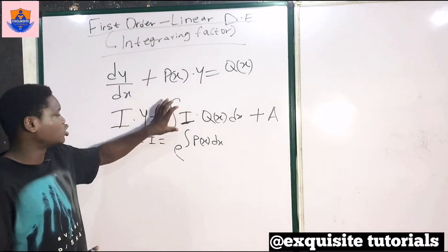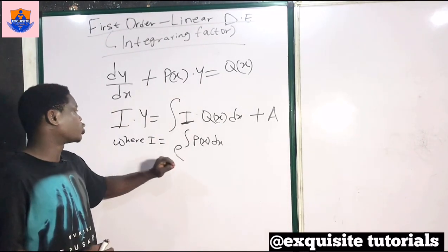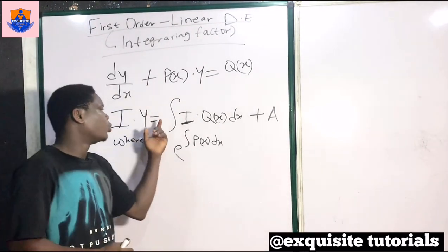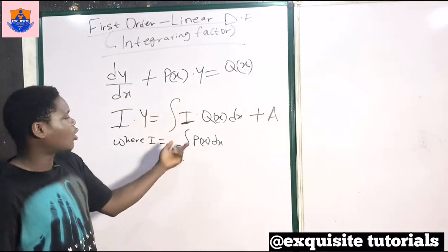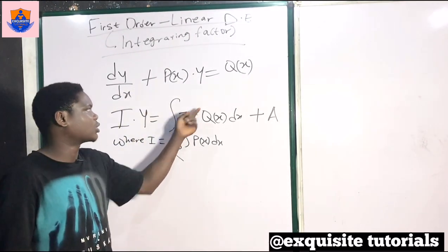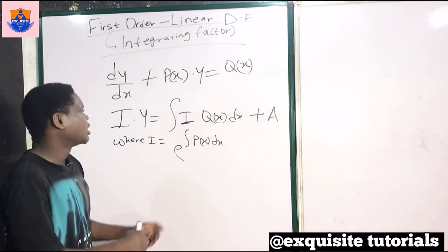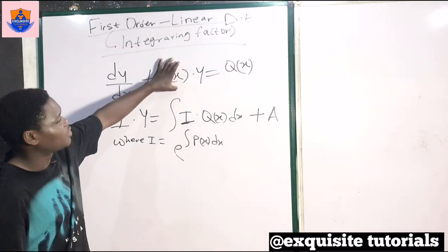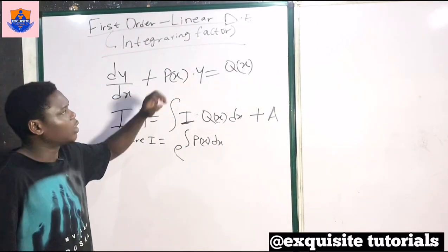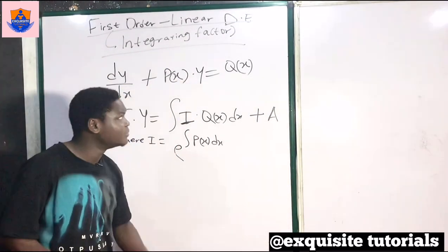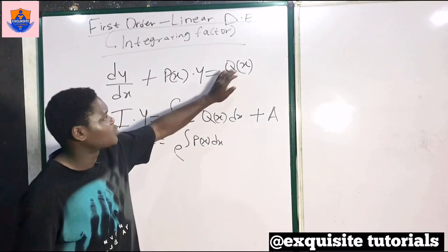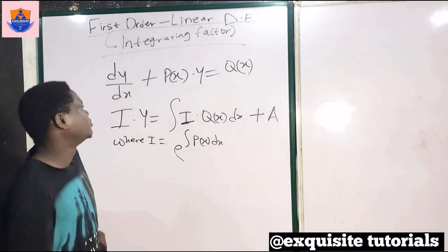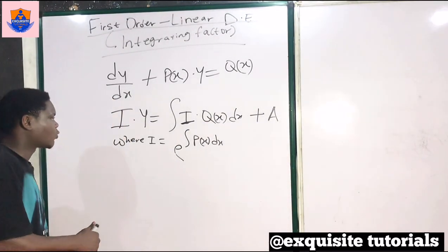So the solution to the differential equation is the integrating factor times y, which equals the integral of the integrating factor times q of x. The integrating factor is the exponential of the integral of p of x, and this must be a function of x only. Now let's solve one question — we'll solve about five questions in this video.